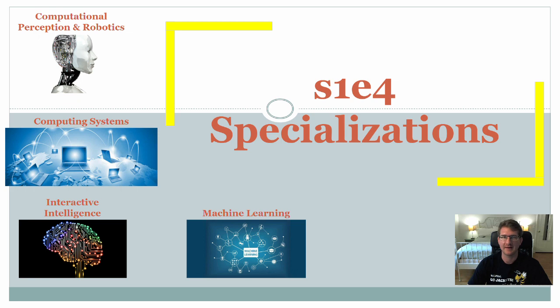As a reminder, I did have a video in Semester 1, Episode 4, called Specializations. In this video, we went through each of the four specializations that's offered for the OMSCS program, namely Computational Perception and Robotics, Computing Systems, Interactive Intelligence, and Machine Learning. If you'd like to see that video before watching this one, I left a link in the video description.